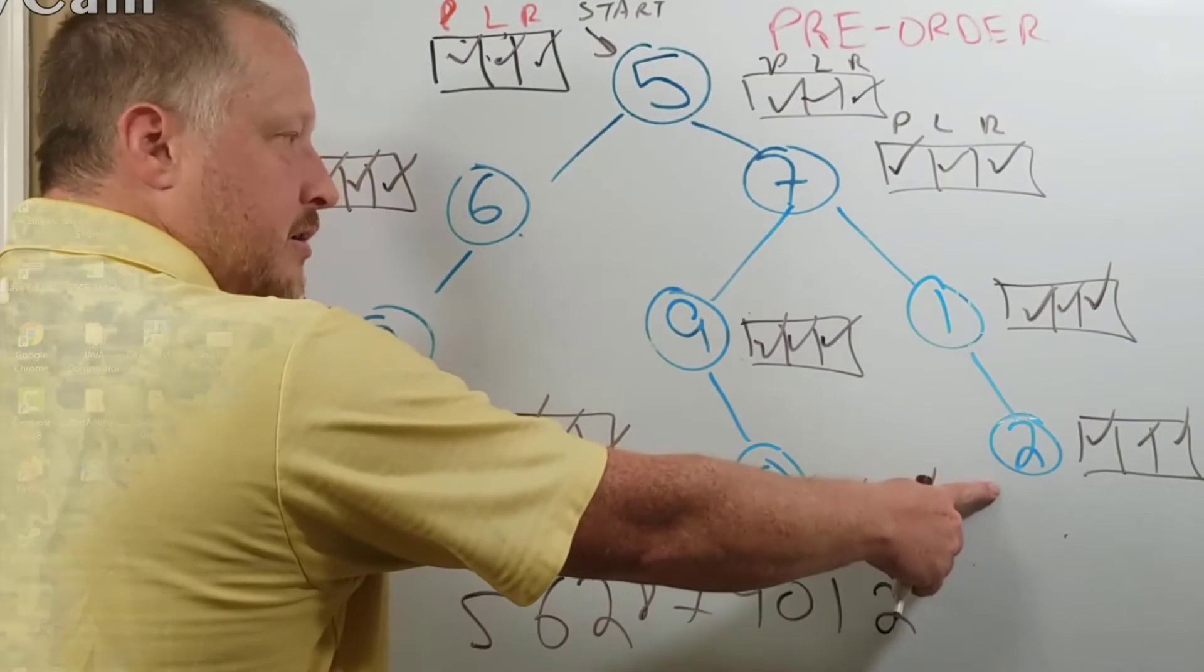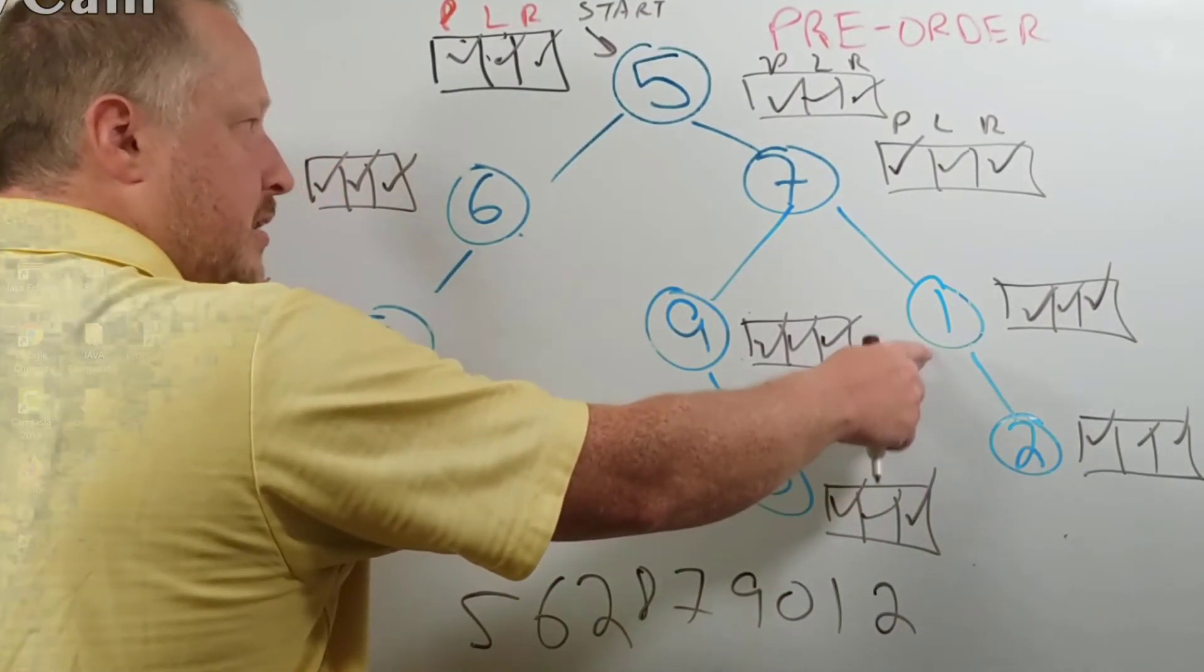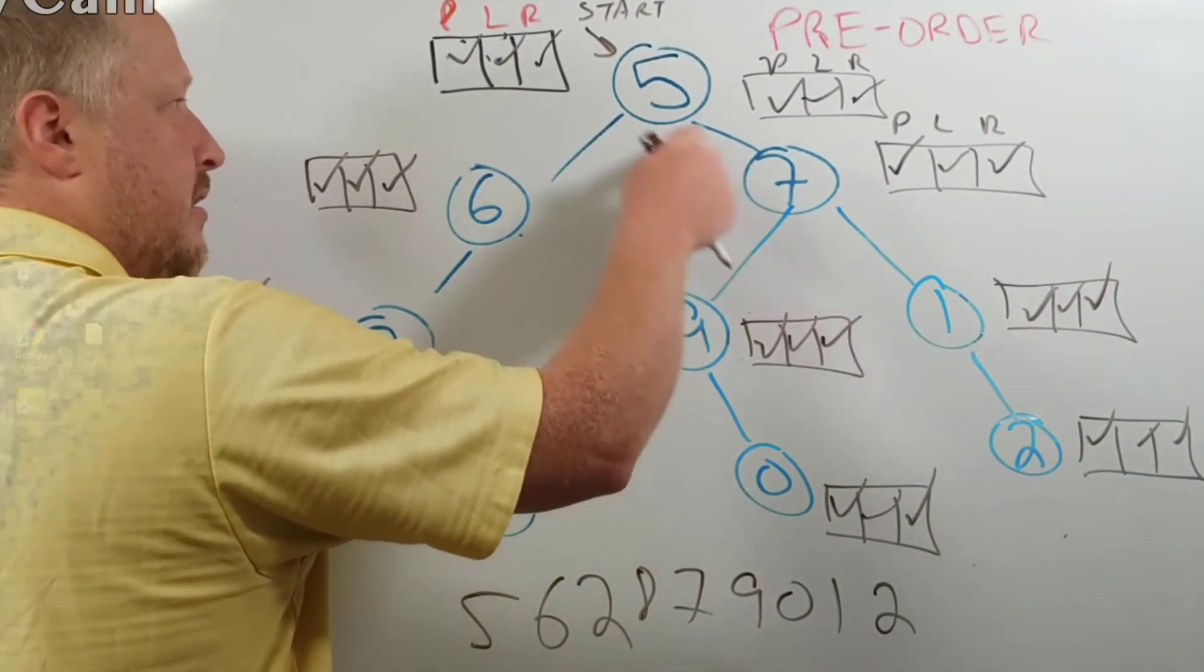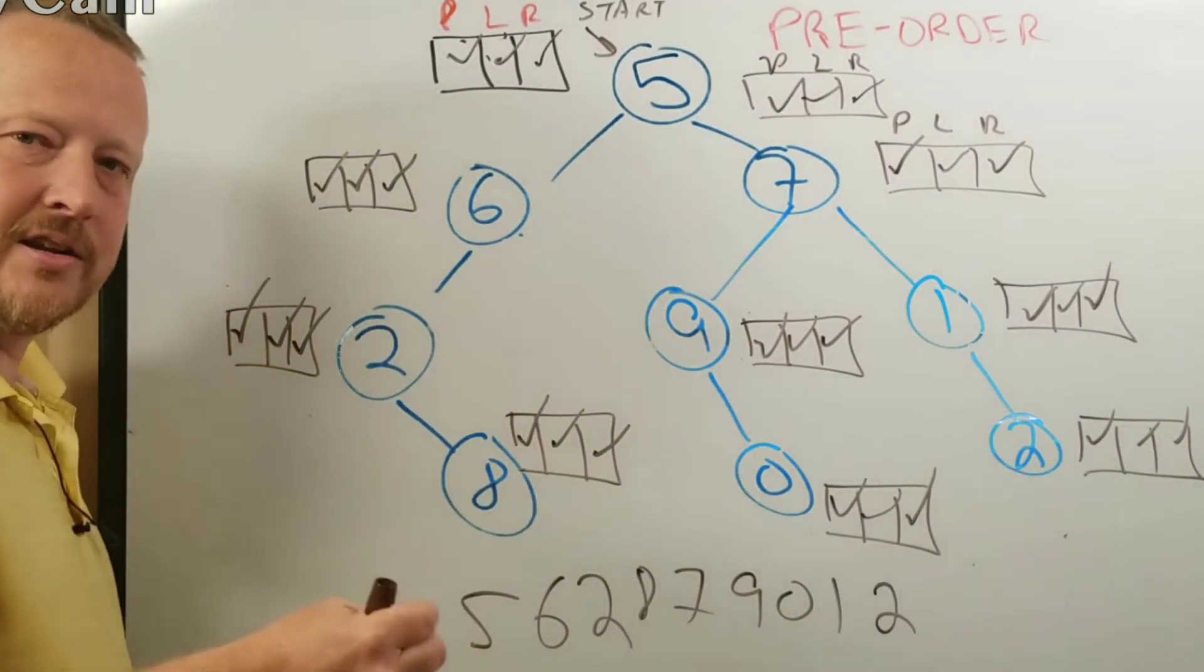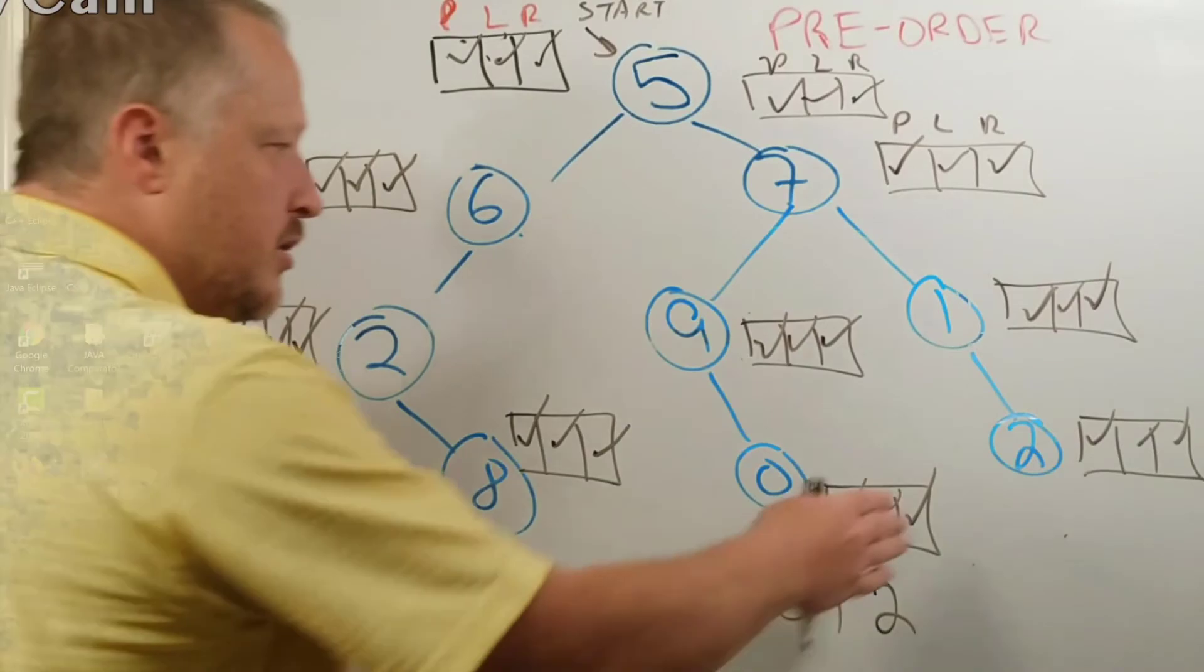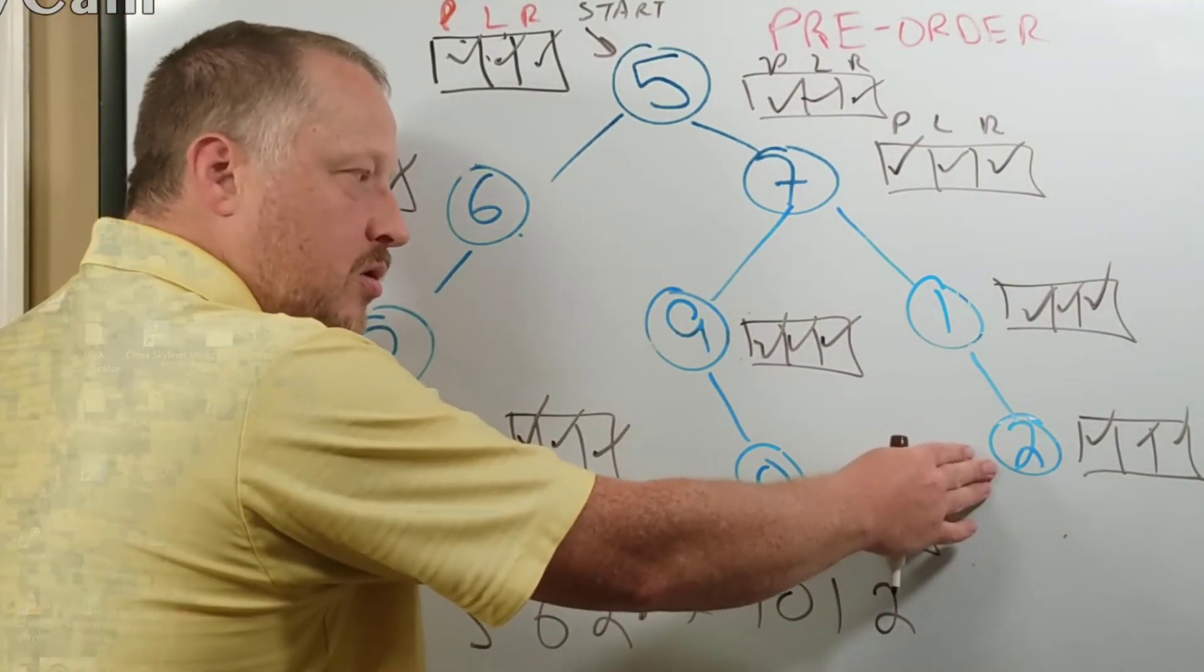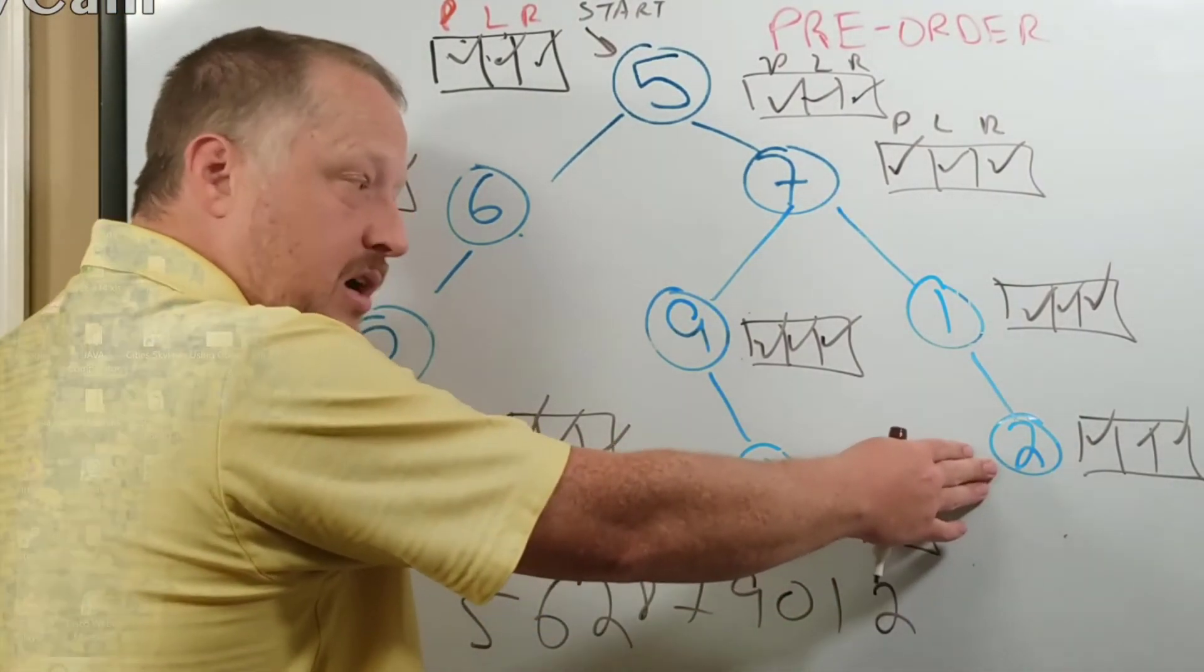Two, I'm all done. One, I'm all done. Seven, I'm all done. And then five. So notice where my hand has kind of been. Think of my hand as the current pointer. So if I know I'm done at two, I have nowhere else to go. I'm done with two. Well,